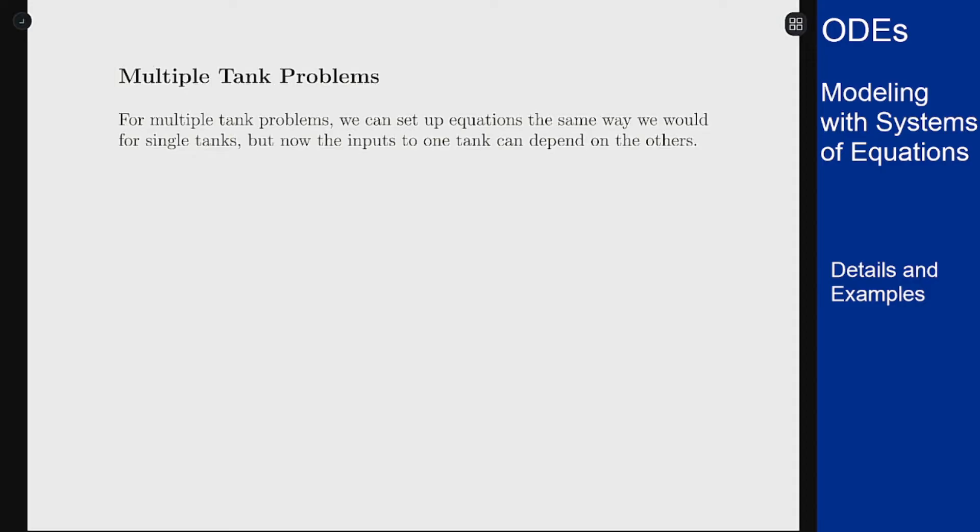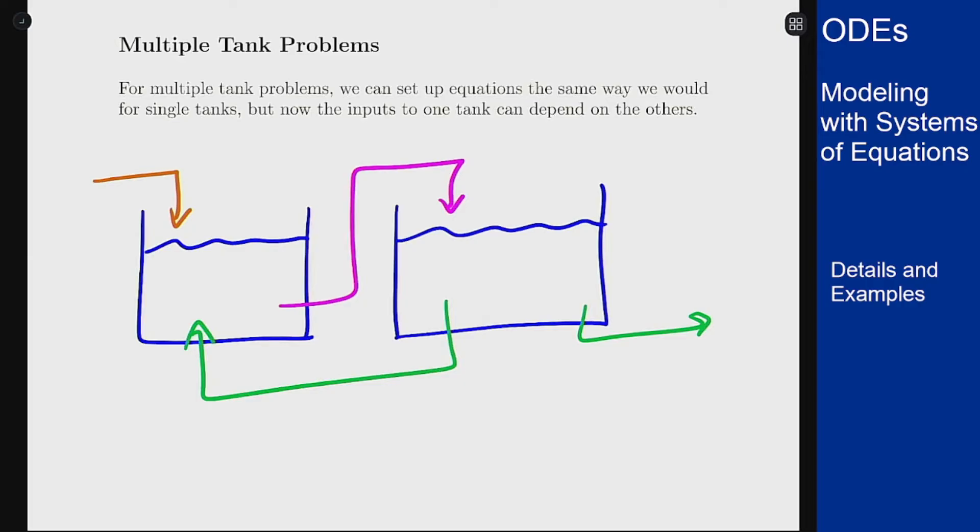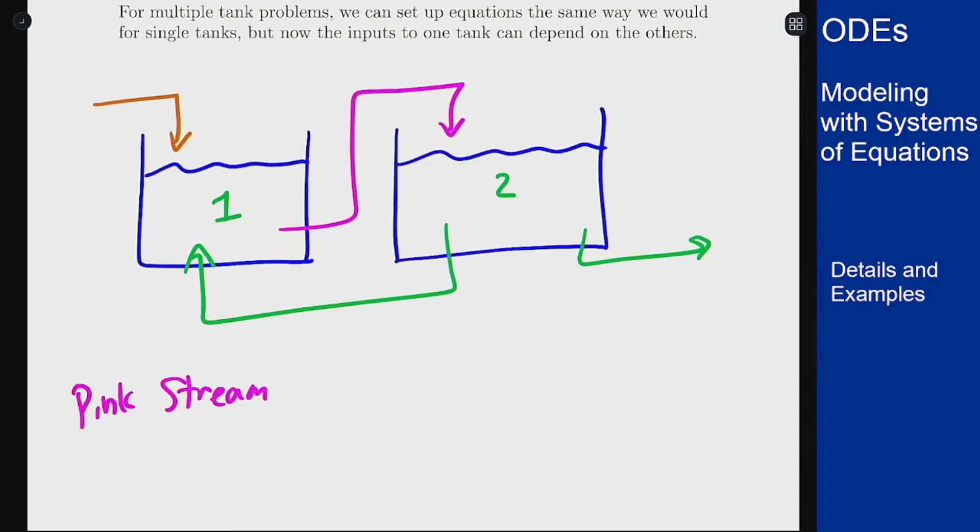The outputs from one tank can influence the inputs of the other and vice versa. So as a generic sketch, if I have two tanks, I might have an external flow into this tank. I might have a pipe that connects this tank into this one, and this one either could just flow out or I could have an outflow that also loops back into tank one. All these are options for this system, and the point is this pink stream is both an outflow from tank one and an inflow to tank two.